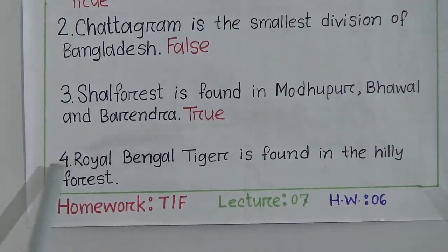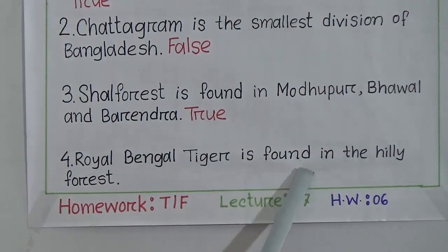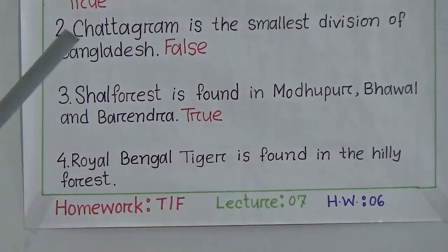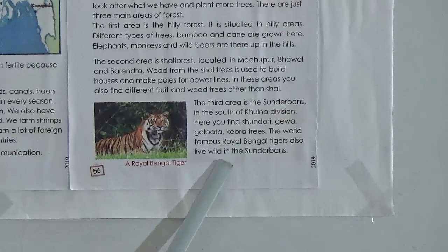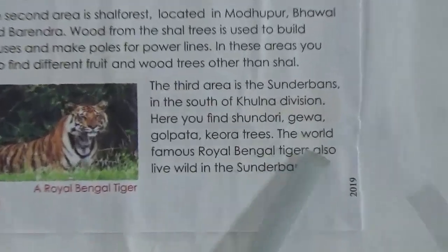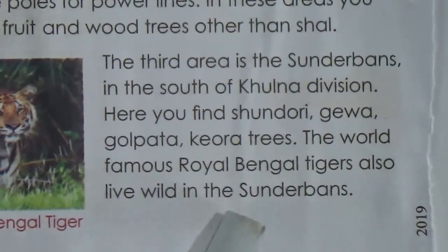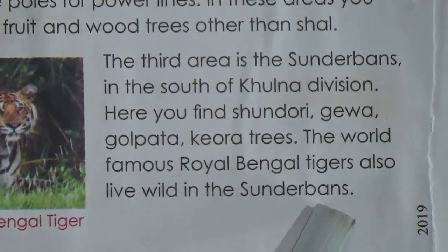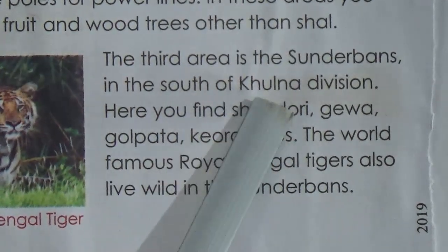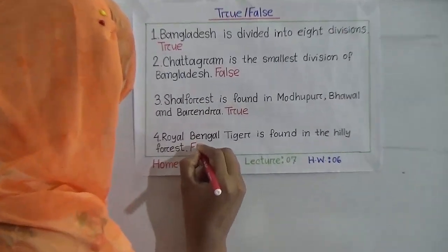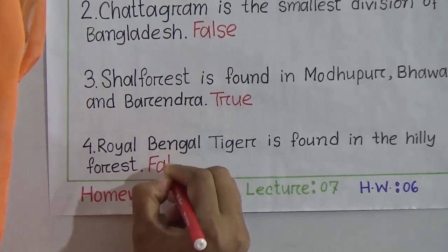Number four: Royal Bengal Tiger is found in the hilly forest — is it true or false? From Lesson 4, the world-famous Royal Bengal Tigers live in the Sundarbans, which is in the Khulna division — so this is definitely a false statement.